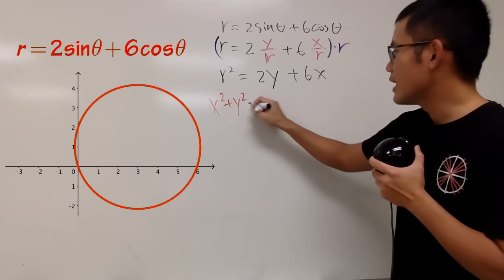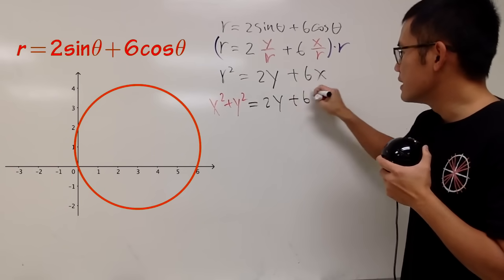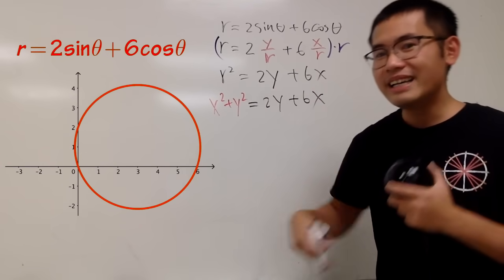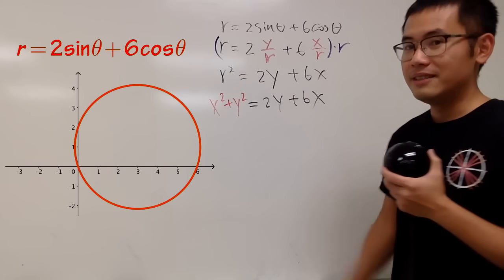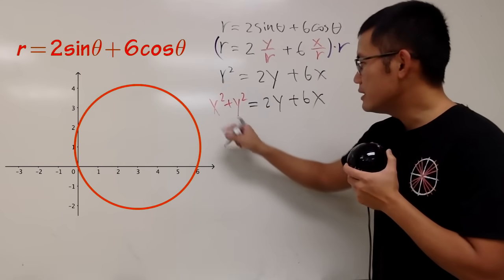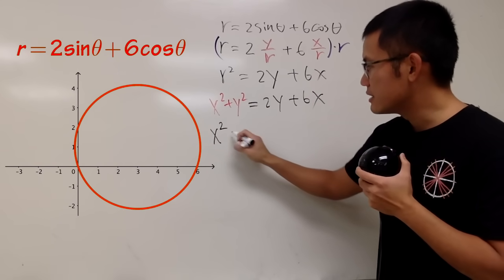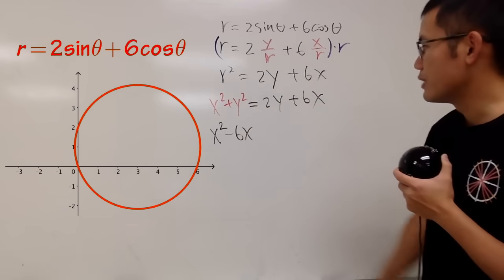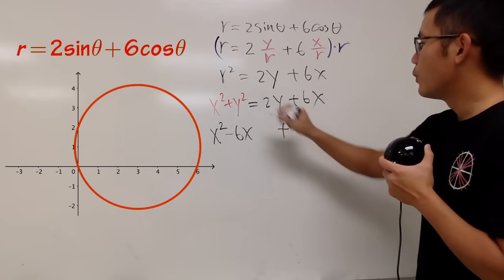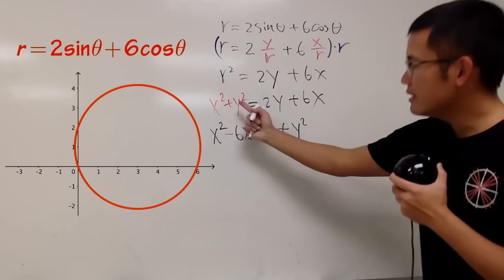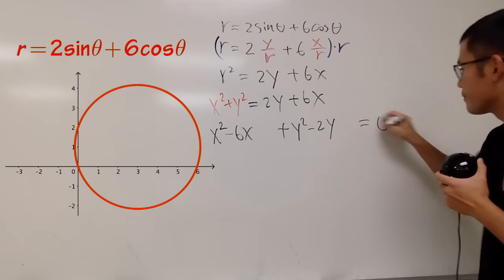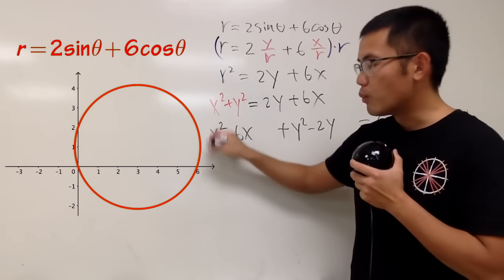So we have X squared plus Y squared equals 2Y plus 6X. From here, we can move these two terms to the other side and complete the square, and you'll see this is in fact a circle in Cartesian form. So: X squared minus 6X, leave a space for the magic number, plus Y squared minus 2Y, leave a space — and this equals 0. Notice that we have a 1 here, so that's good.